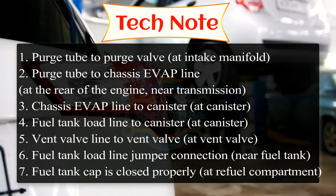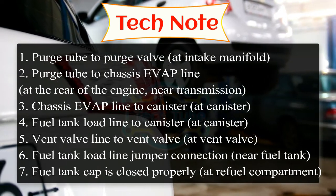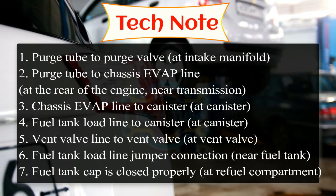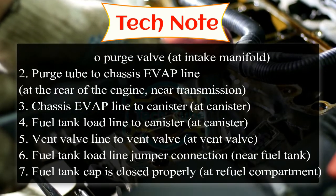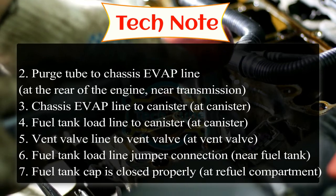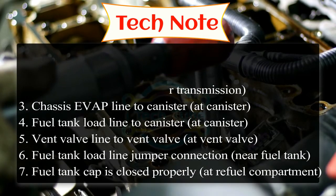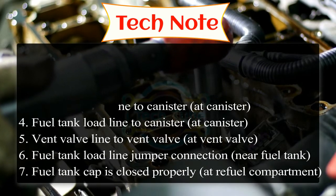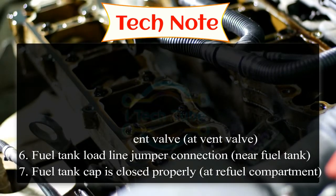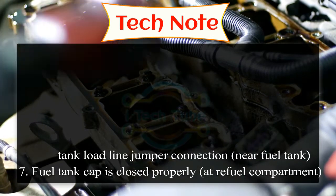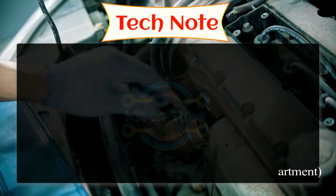Continuing the critical connections: Number 5 — vent valve line to vent valve at vent valve. Number 6 — fuel tank load line jumper connection near fuel tank. Number 7 — fuel tank cap is closed properly at refuel compartment.